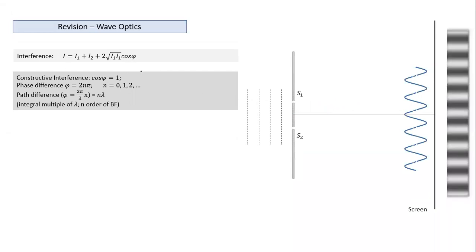At different points on the screen, the path difference is different, so φ is different, and therefore intensity is different. You will have different intensities on the screen when both slits are open — someplace bright, lesser bright, dark, and again bright. This is the interference pattern. Using the resultant intensity formula, constructive interference corresponds to maximum intensity when cos φ = 1, and destructive interference corresponds to minimum intensity when cos φ = −1.